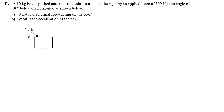A 10-kilogram box is pushed across a frictionless surface to the right by an applied force of 300 newtons at an angle of 30 degrees below the horizontal as shown. What is the normal force acting on the box and what is the acceleration of the box?